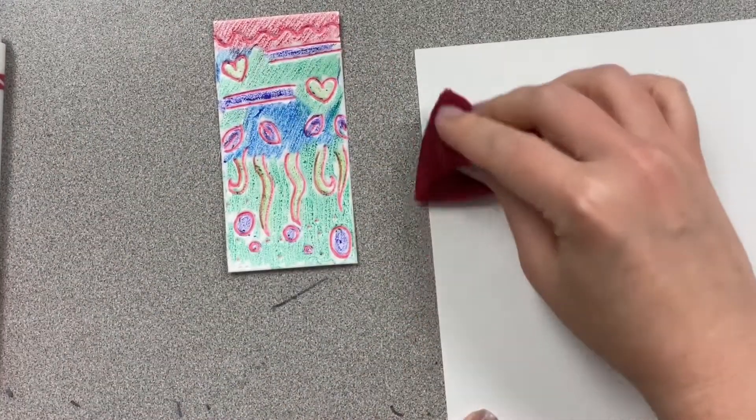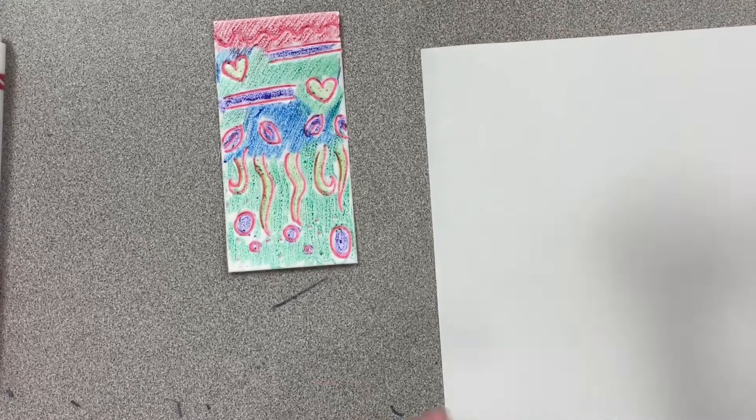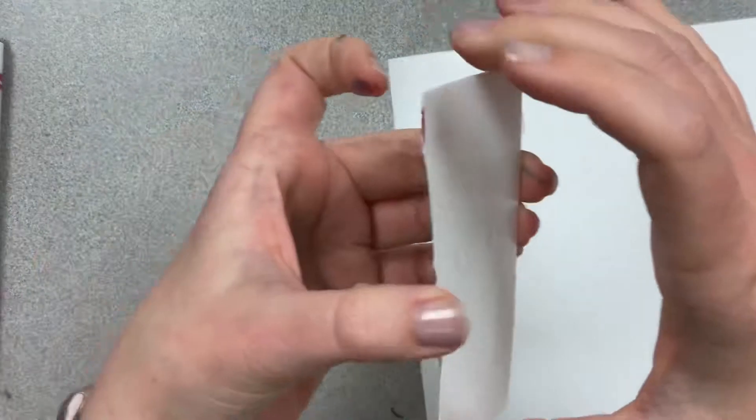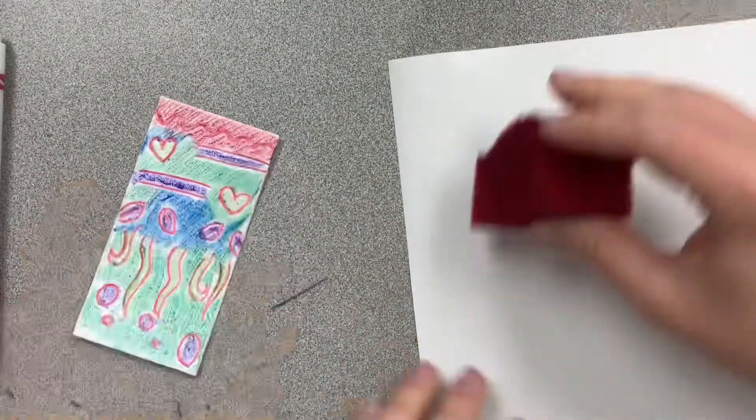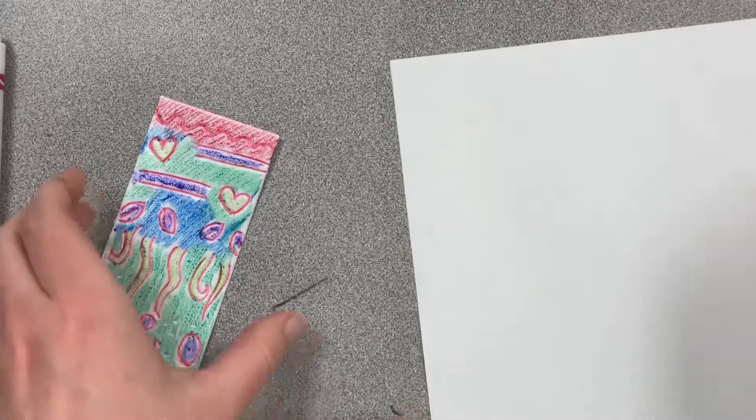Once you have colored your print, you're going to use a sponge to get the surface of your paper damp. You don't want it to be shiny wet, you just want it to be damp. And you want to make sure that you've got an area big enough so that your whole stamp fits inside.